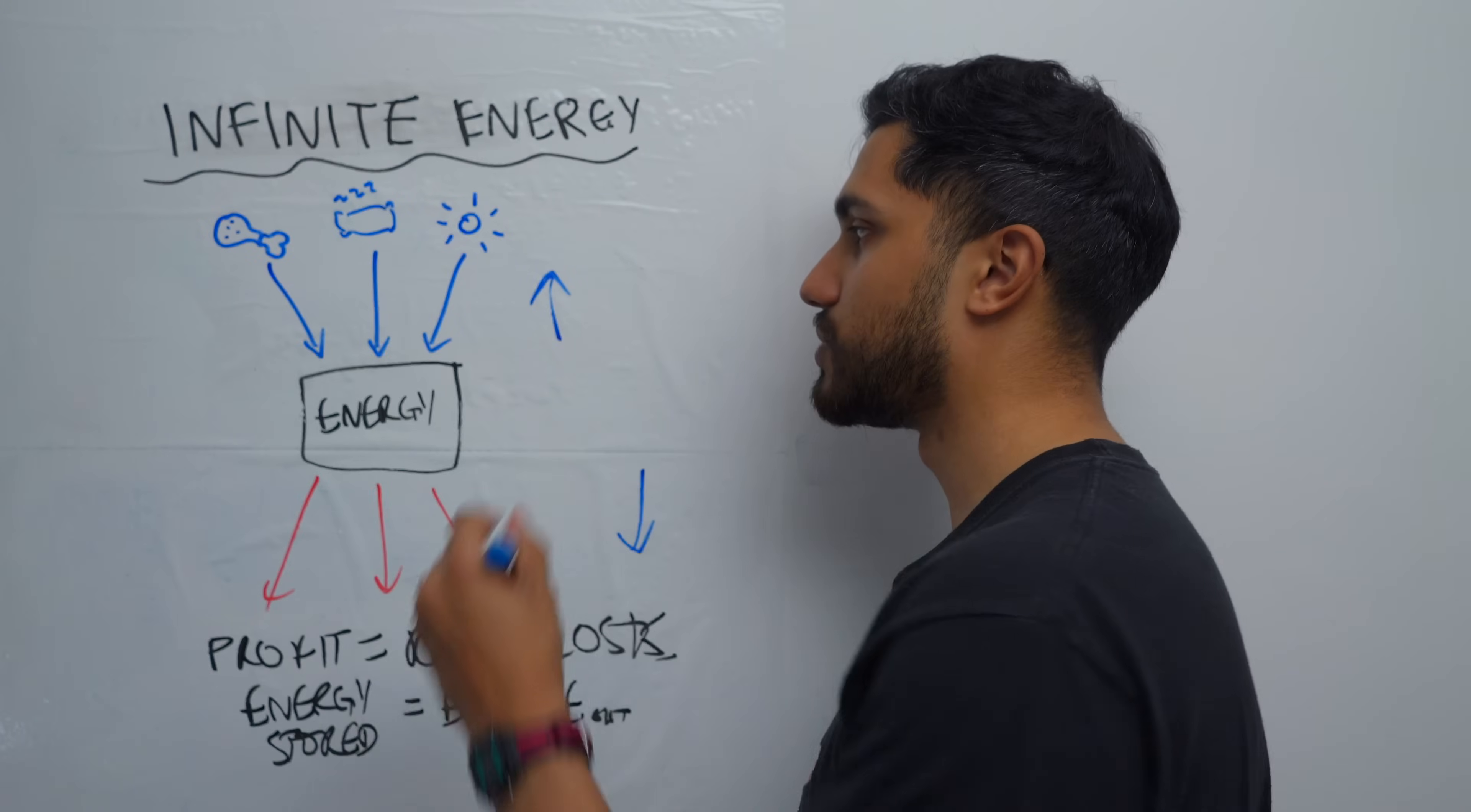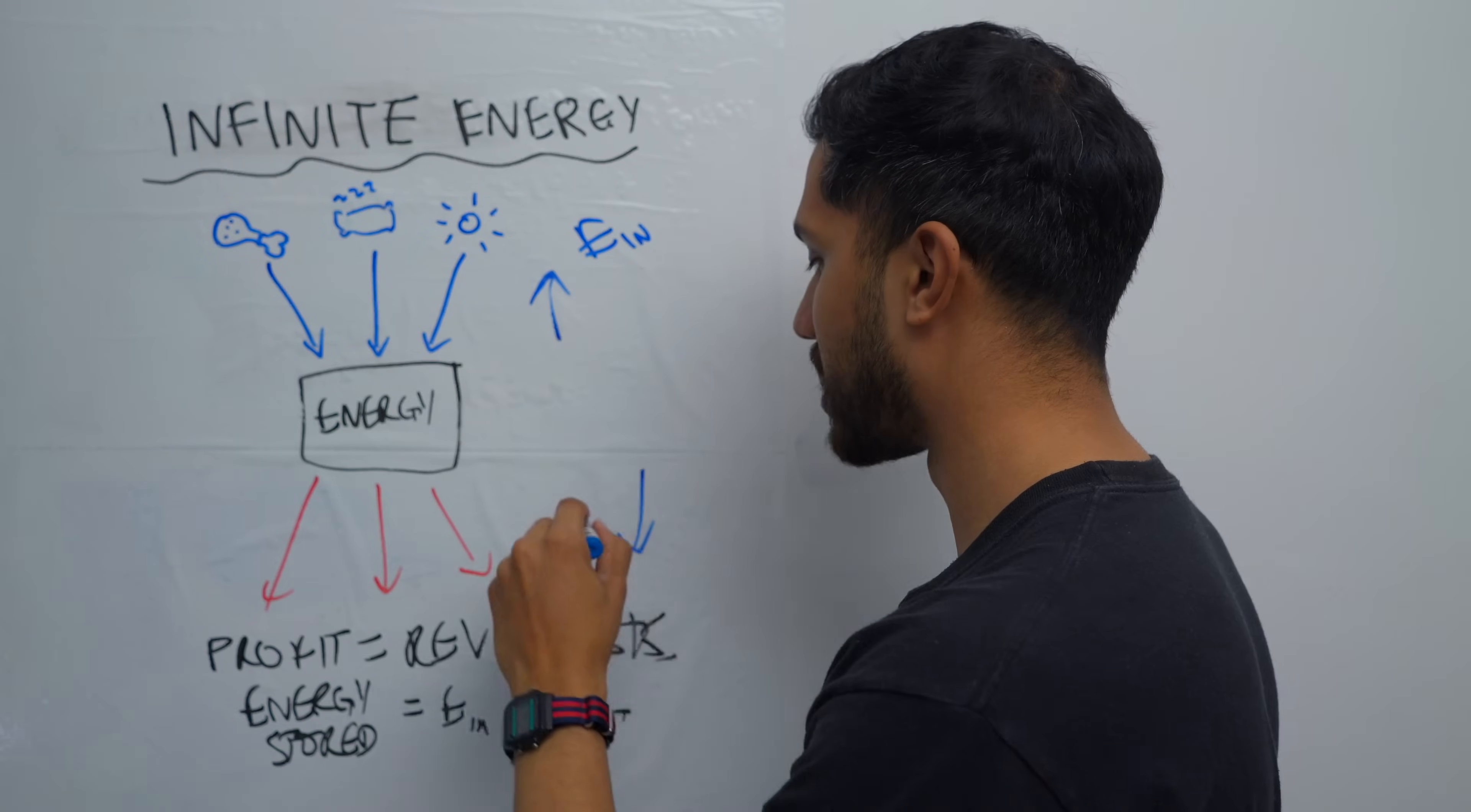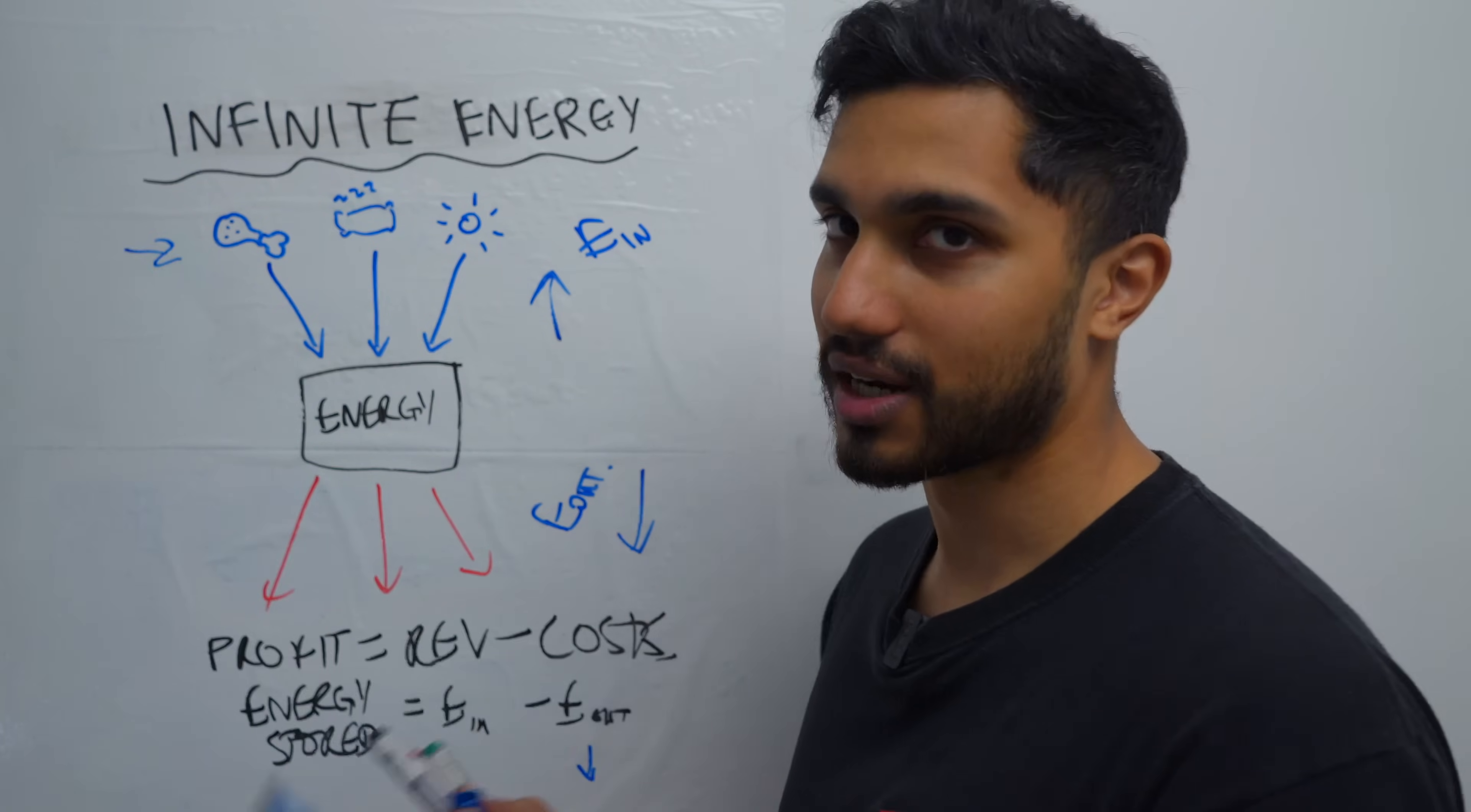Most of the advice that we get online is about the energy coming in - eating better, sleeping more, getting more sunlight. These are things that are very good, but nobody really talks about the energy coming out. And I'd actually argue that managing the energy out first is better because then you have less energy coming out, you have more energy, and then you have more energy to do the good things that give you more energy.